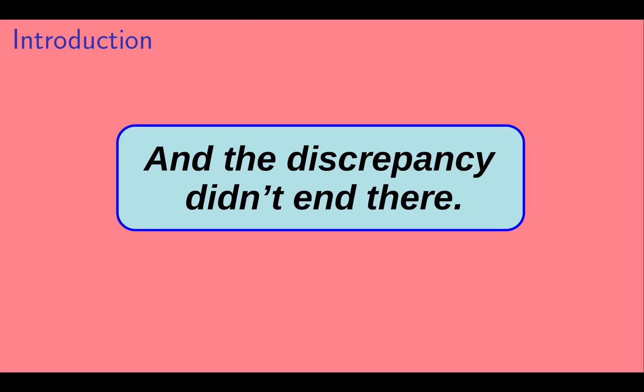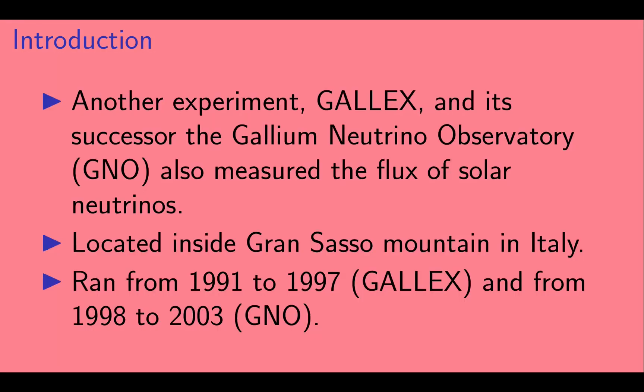And the discrepancy didn't end there. Another experiment, GALLEX, and its successor, the Gallium Neutrino Observatory (GNO), also measured the flux of solar neutrinos.